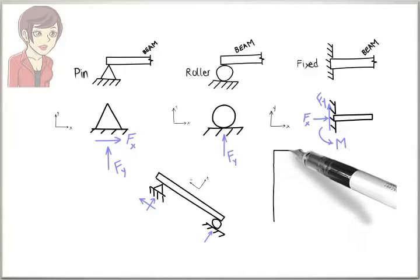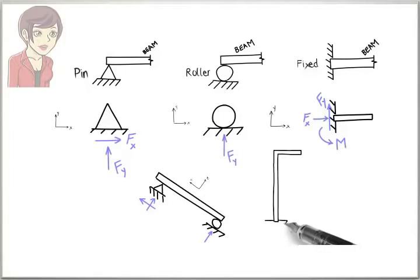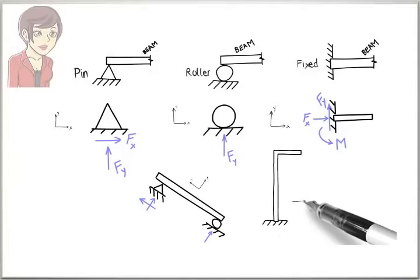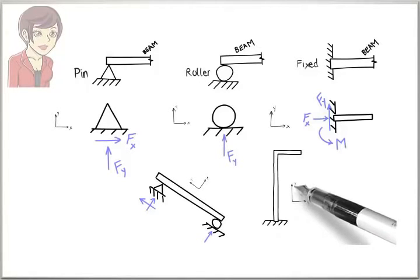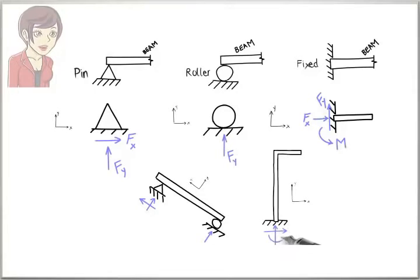In this example, the beam is fixed at one end but free at the other end. Therefore, there are three reactions involved here: a force in the X direction, a force in the Y direction, and a bending moment.